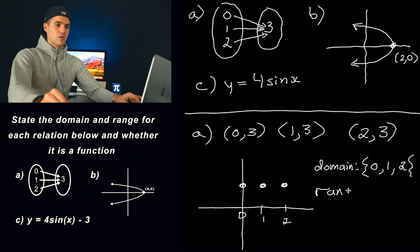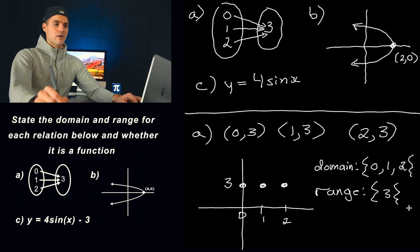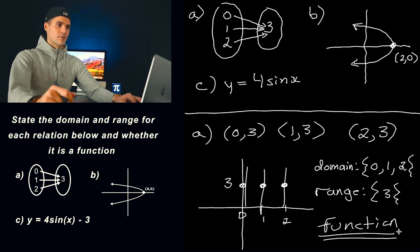The range, well notice this whole time there's only one y value. We only got this y value of 3. So you would just list out that y value of 3. And then is this relation a function? Well notice that it passes the vertical line test. There's no part in this relation where there's going to be two x values that have the same y value. This passes, this passes, this passes. So we know that this relation is indeed a function.